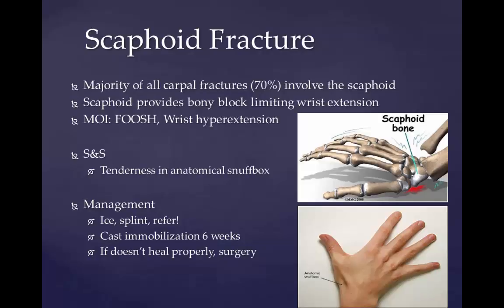Treatment of scaphoid fractures is guided by the location of the fracture — either proximal, waist, or distal — displacement, whether it has instability or not, and patient tolerance for cast immobilization. Non-displaced or minimally displaced waist and distal fractures have a high rate of union with closed cast management. If the fracture does not heal correctly or becomes a non-union fracture, meaning the two parts of the bone do not completely heal, then surgical intervention may be necessary.